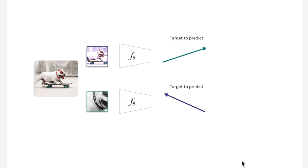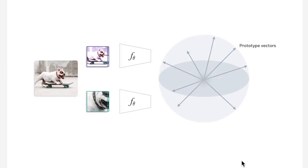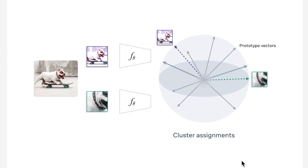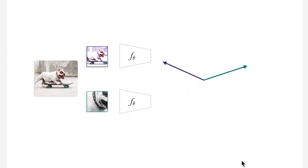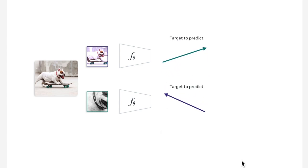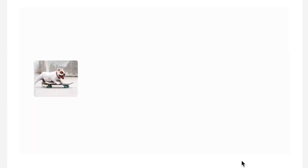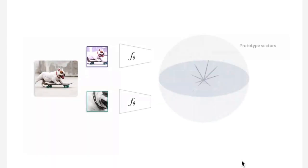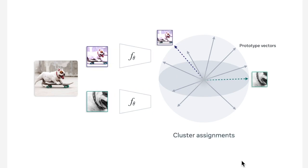Self-supervised learning is one of the most exciting areas of deep learning research making the most rapid progress. This is where you construct supervised loss functions and learning tasks from unlabeled data, and then scale up representation learning on a massive amount of data because you don't have to manually label it. In this paper, they're testing a contrastive clustering algorithm with billions of Instagram images, which would take a long time to manually annotate. There are three popular ways of doing self-supervised learning with images.